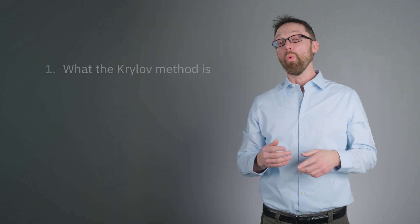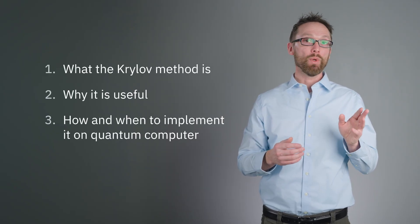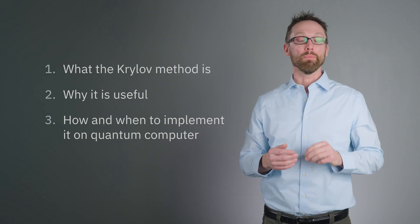Krylov Quantum Diagonalization, or KQD for short, refers to solving a matrix eigenvalue problem by projecting the matrix into a subspace prepared on a quantum computer consistent with the Krylov method, a powerful approach from classical linear algebra. Throughout this video, we'll explore what the Krylov method is, why it's useful, and how and when to implement it on quantum computers.